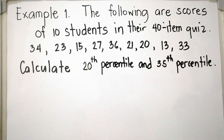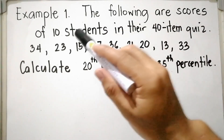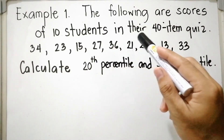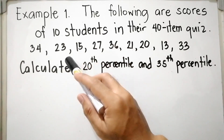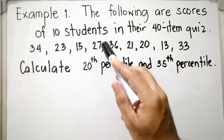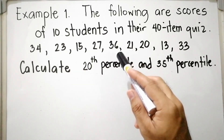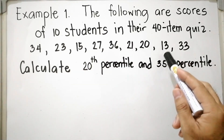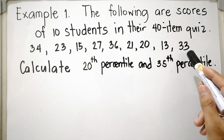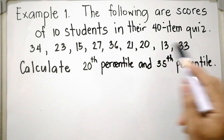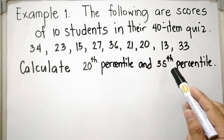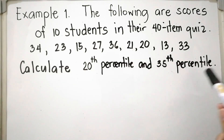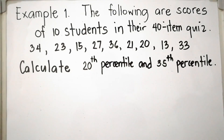Let us have example number 1. The following are scores of 10 students in their 40-item quiz: 34, 23, 15, 27, 36, 21, 20, 13, and 33. Calculate the 20th percentile and the 35th percentile.